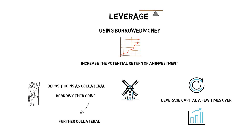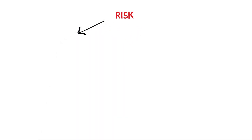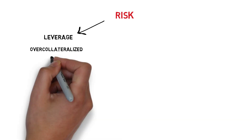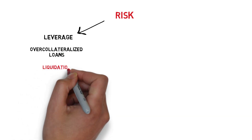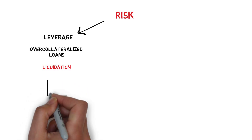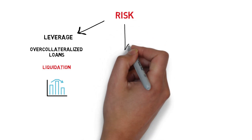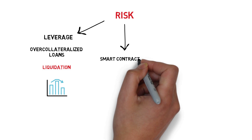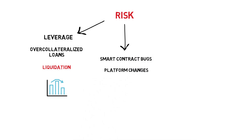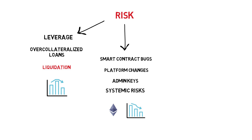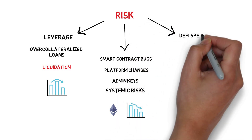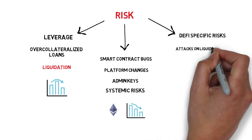The last missing element of double or triple-digit APYs is the high risk that farmers are willing to take. The first risk is related to leverage — all the loans that farmers are taking are over-collateralized, and the supplied collateral is susceptible to liquidation if the collateralization ratio drops below a certain threshold. Besides liquidation risk, we have standard smart contract risks like bugs, platform changes, admin keys, and systemic risks such as Ether sharply losing its value. On top of that, there are a few new attack vectors specific to DeFi, for example attacks that aim at draining certain liquidity pools.